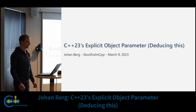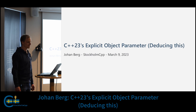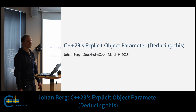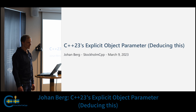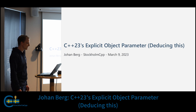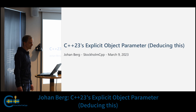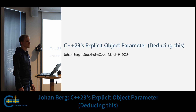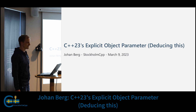My name is Johan Berg and this is the second time I attend this meetup. I got inspired by the talks from last time and decided to submit my own talk. I will be talking about a C++23 feature called Explicit Object Parameter, or you may have heard it by the name 'deducing this'.